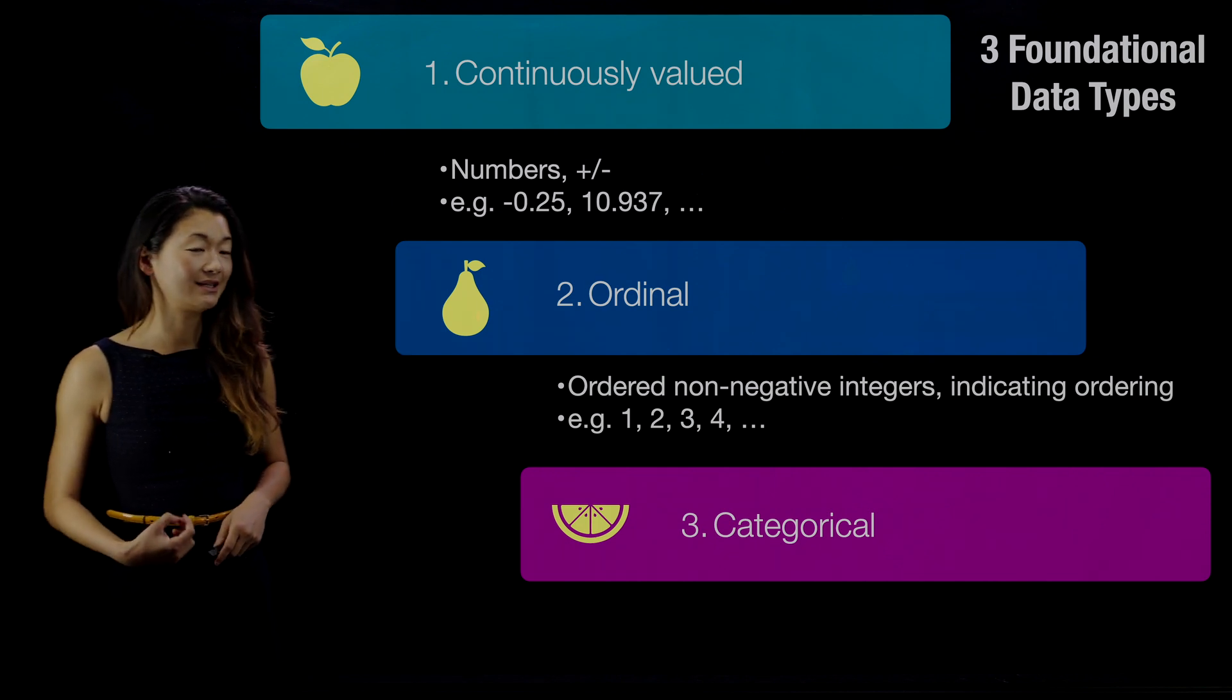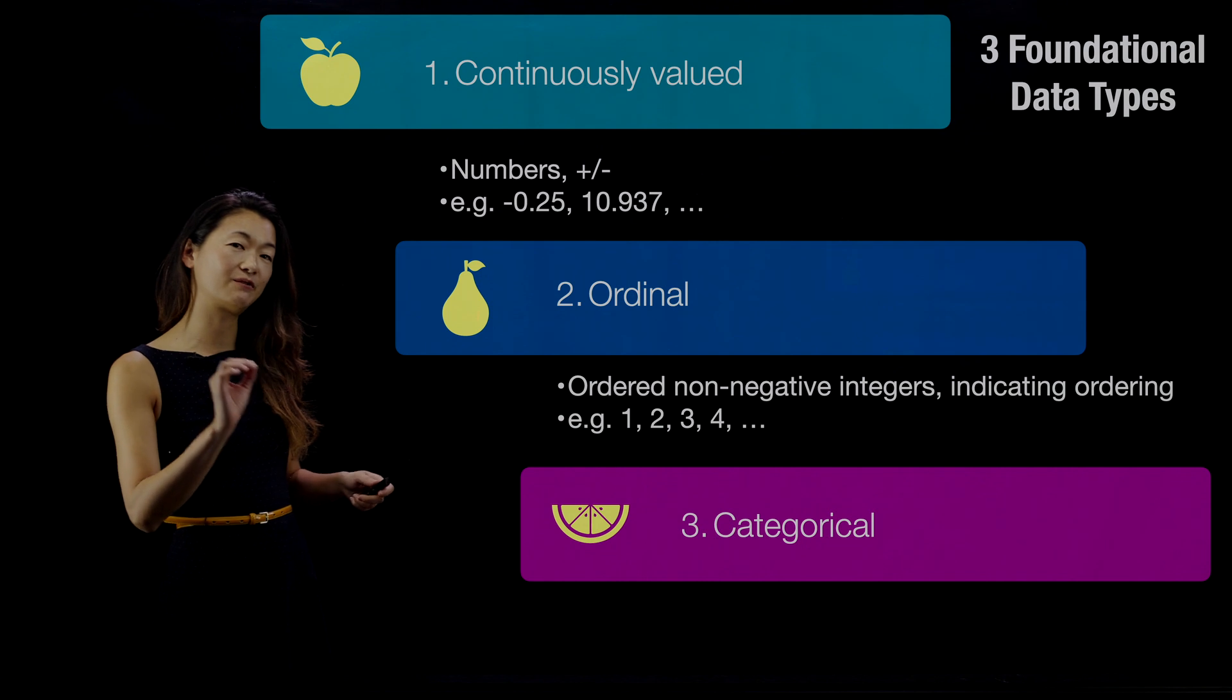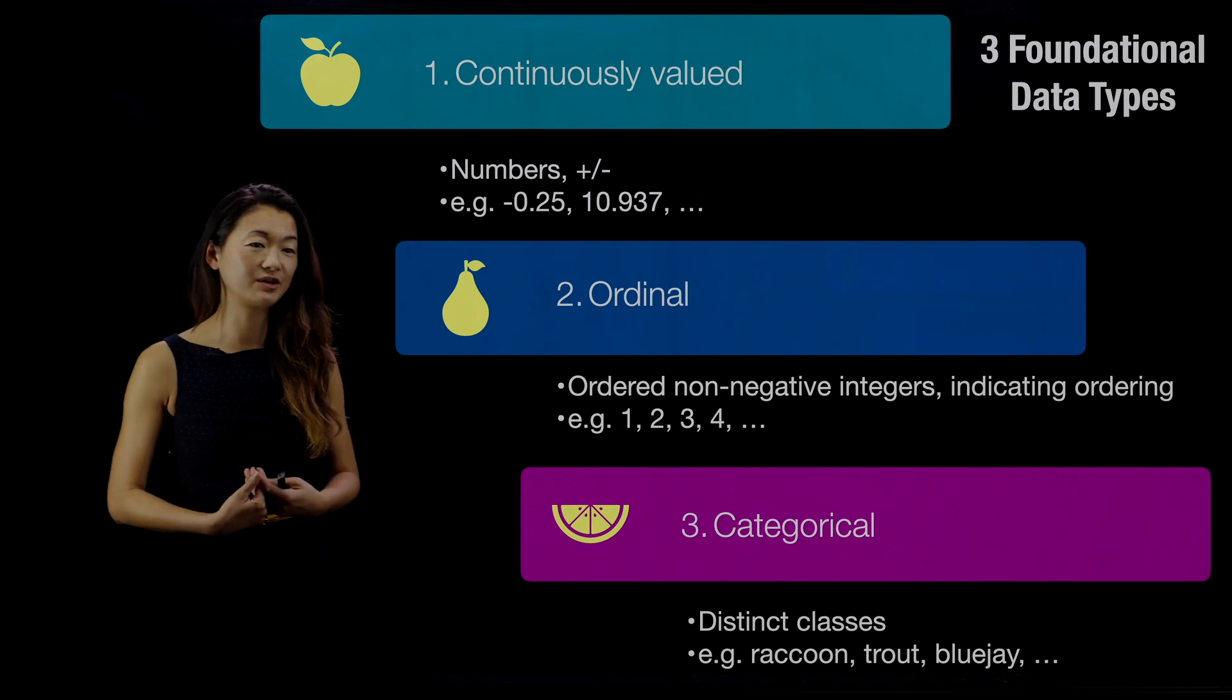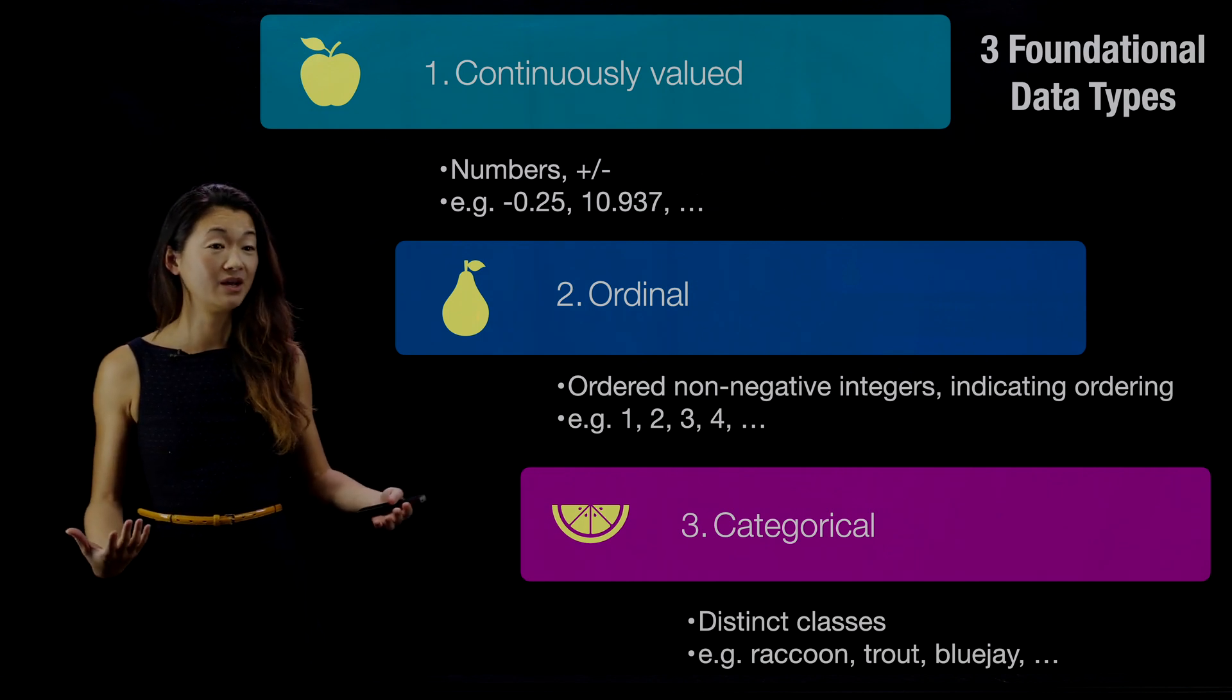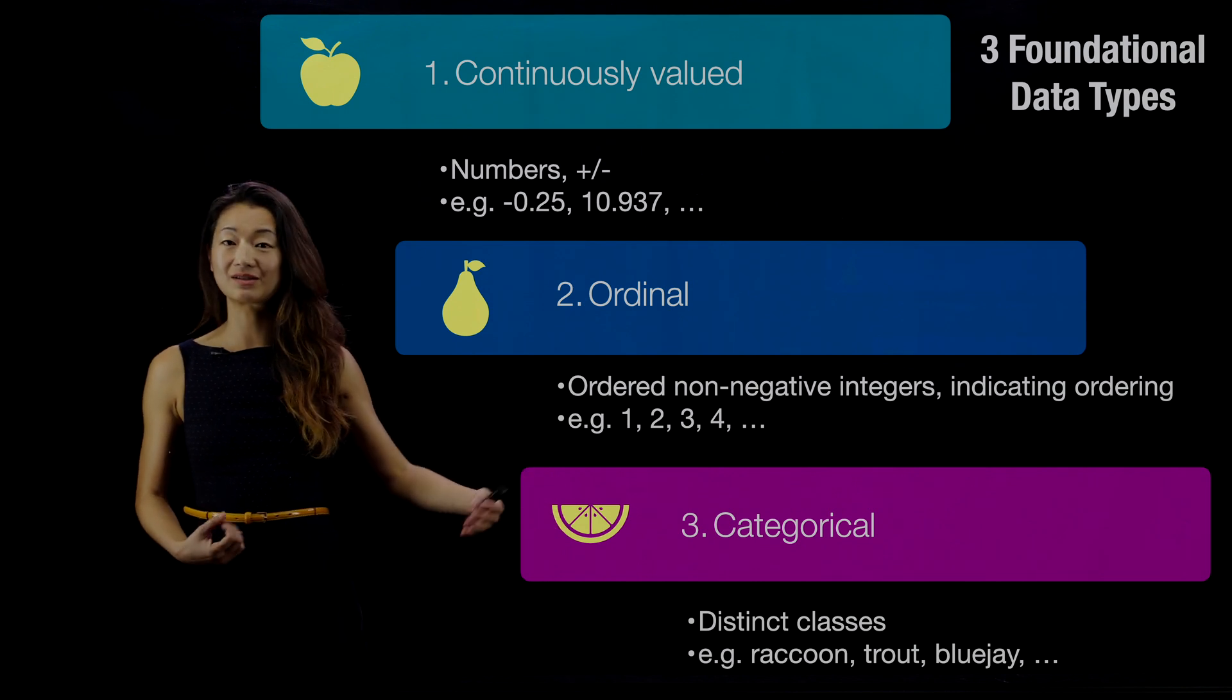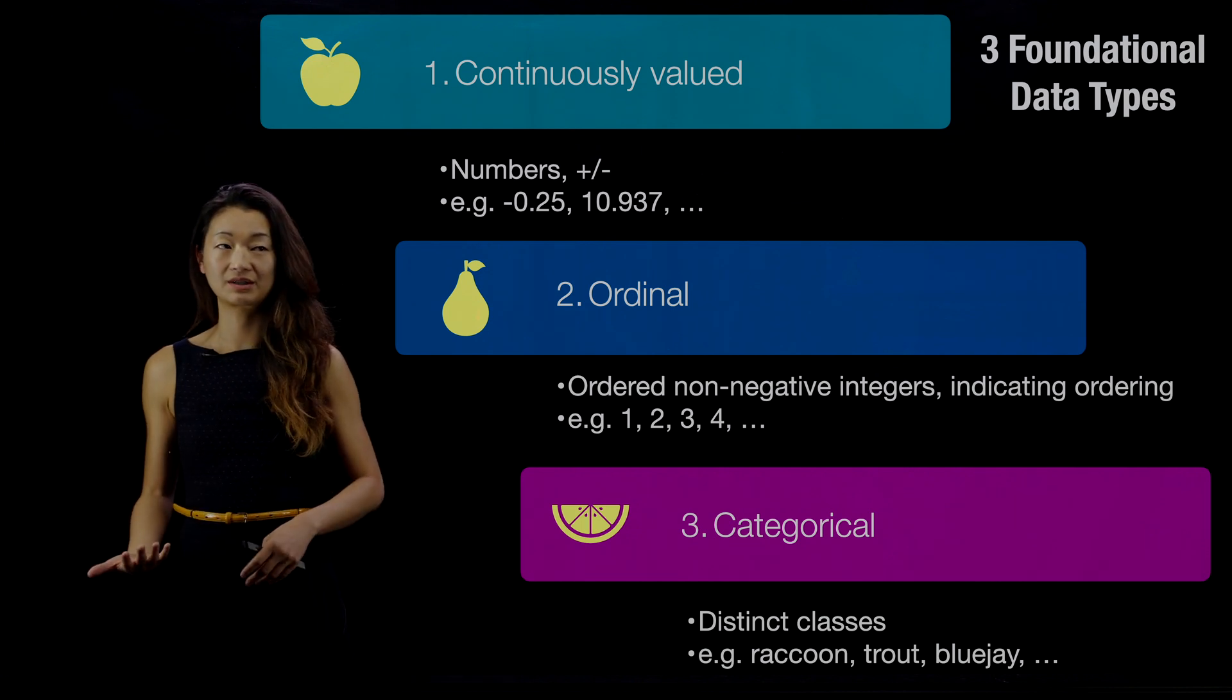The third type of dataset is categorical. Categorical is kind of intuitive what it is, but it's important to keep them separate from the first two types of data. Categorical data are datasets that come in distinct classes. So for example, if you're an animal, you could be a raccoon, you could be a trout, or you could be a blue jay. Those are just different types of animals. Now the reason this is important is because a raccoon is not like a trout, and a trout is not like a blue jay, and they're just distinct, different from each other, and it's not obvious if one of them are close to each other or not.